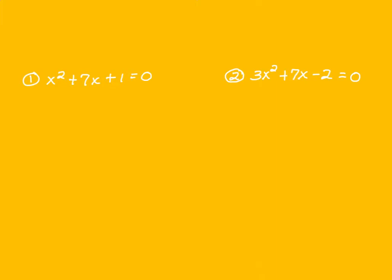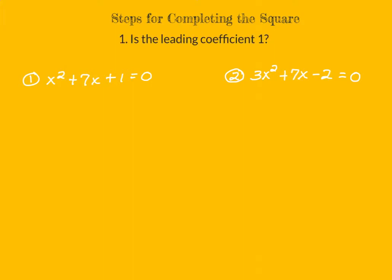Here are two quadratic equations that will not factor — you cannot solve these by factoring. So let's go through the steps of completing the square and we'll see how the steps differ only slightly for these two equations. Our first step is to ask: is the leading coefficient 1? The leading coefficient means the coefficient of the first term, the squared term, for these problems.